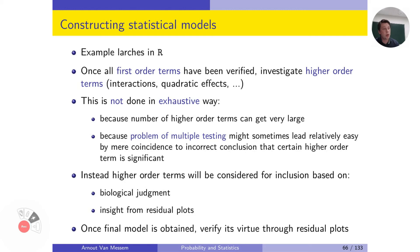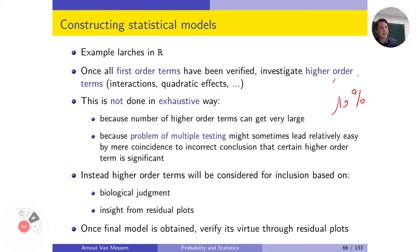Higher-order or interaction terms will mostly be considered for inclusion based on biological insight — does it make sense to include this interaction term or higher-order term? For higher-order terms, we usually look at the residual plot to decide whether to include a squared or cubic term. For interaction terms, we rely on judgment. For constructing a statistical model, we will usually look at a significance level of 10%, not 5%, so as not to be too strict and to include a sufficient number of significant predictors.